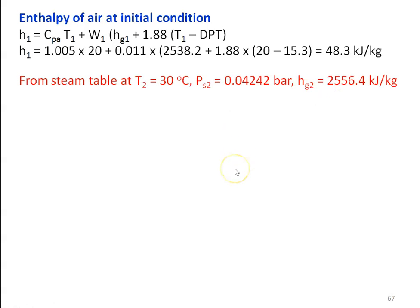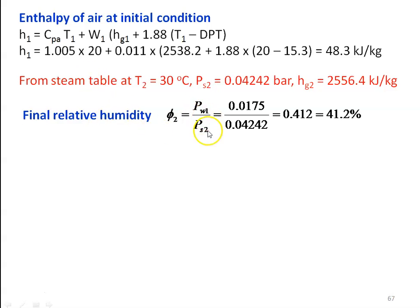From the steam table at T2 equal to 30 degree Celsius, PS2 equal to 0.04242 bar and HG2 equal to 2556.4 kilojoules per kilogram. The relative humidity at the outlet φ2 equal to PW2 divided by PS2. For a sensible heating process, there is no change in water vapor pressure, so PW1 equal to PW2. Therefore φ2 equal to PW1 divided by PS2 equal to 0.0175 divided by 0.04242 equal to 41.2 percent.